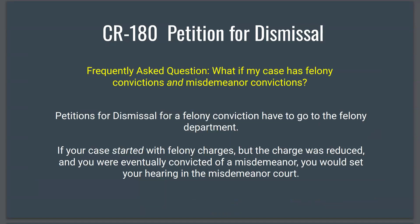A common question: what if your case has both felony and misdemeanor convictions? Petitions for dismissal for a felony conviction must go to the felony department — so if you have one felony conviction and ten misdemeanors, this goes to the felony department. However, if your case started with felony charges but was reduced to a misdemeanor through a plea bargain and you were convicted of a misdemeanor, you'd be setting your hearing in the misdemeanor court in Bakersfield.